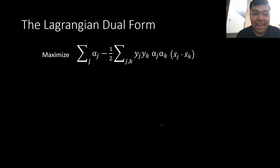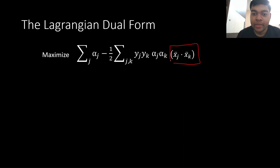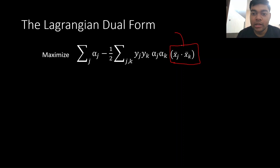Let's get into the math now. This is the Lagrangian in dual form of the soft margin classification. What I really want you to focus on is this part: in this entire formulation, what the input data is actually doing — what we need input data for — is just the computation of the inner product of the two input data vectors.